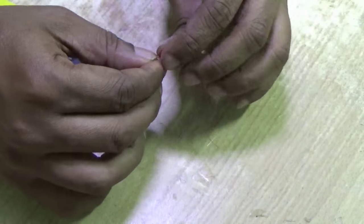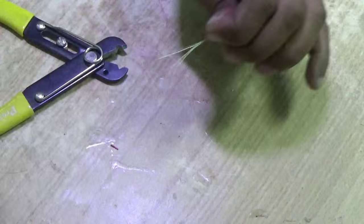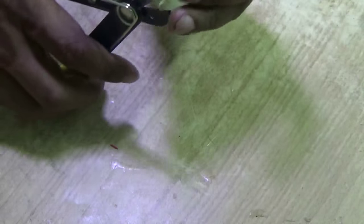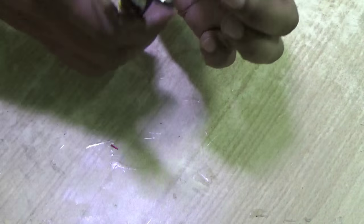Leaving a little bit of jacket at the middle, cut both the sides to equal length.